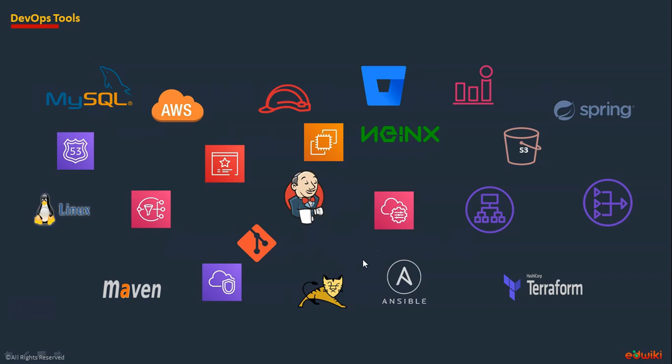Excited to know how to integrate all of these tools and gain expertise in this real-time project to deploy AWS infrastructure using a Jenkins pipeline with Terragrunt and Terraform combination? Go ahead and find the link in the description of this video and subscribe to this project series. Have a good career ahead. Thank you.